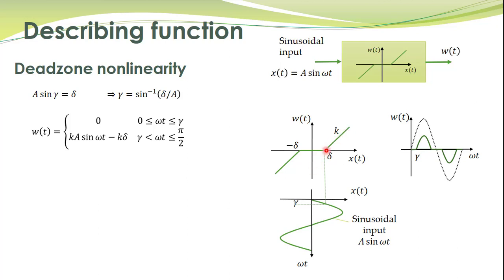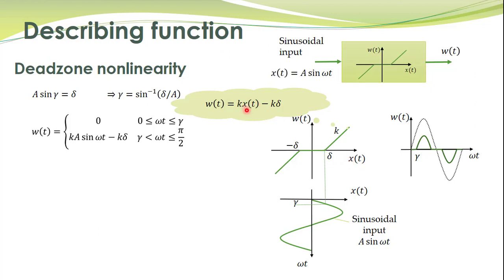If we extend the line, the intercept on the vertical axis is k multiplied by delta, so the intercept is −k·δ and the slope of this line is k. The equation of the straight line is: w(t) = k·x(t) − k·δ. Where x(t) = A sin(ωt). So we substitute this value of the input into this equation to get the expression for w(t).